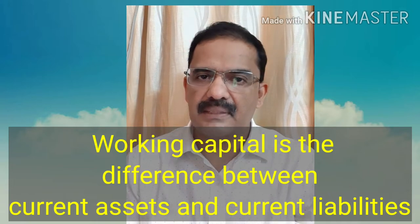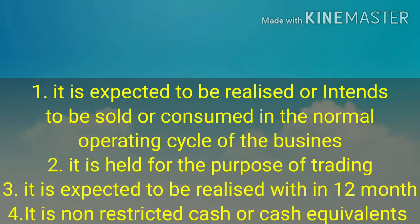An asset is said to be current when it is expected to be realized, intended to be sold, or consumed in the normal operating cycle. For example, sundry debtors need to be realized in the normal operating cycle, finished goods would be sold in the normal operating cycle, and raw material is to be consumed in the normal operating cycle.